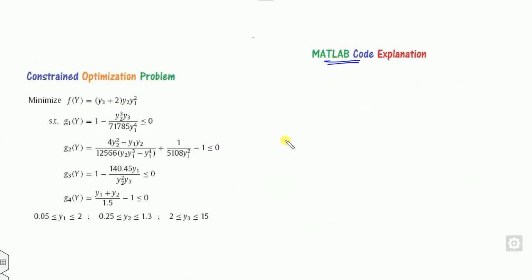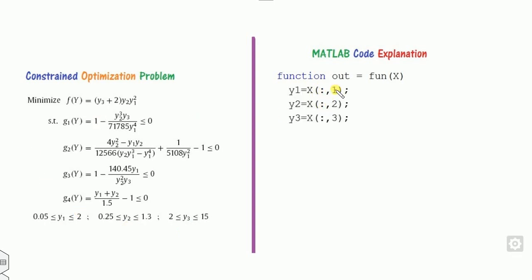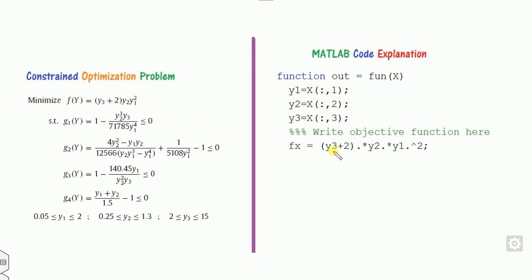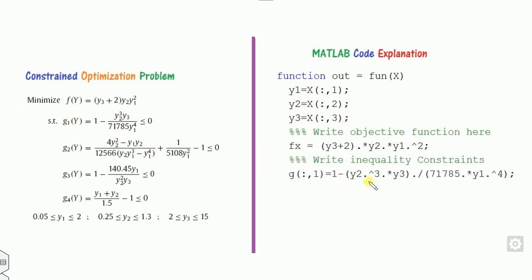Now let's write this in MATLAB. First, write the function definition: function out = fun(x). In this example there are three variables, so define y1 as the first column, y2 as the second, and y3 as the third. Then write the objective function: f(x) = y3 + 2 .* y2 .* y1^2. After that, write the inequality constraints. For the first constraint, g1 = 1 - y2^3 .* y3, divided by the denominator using dot-division.